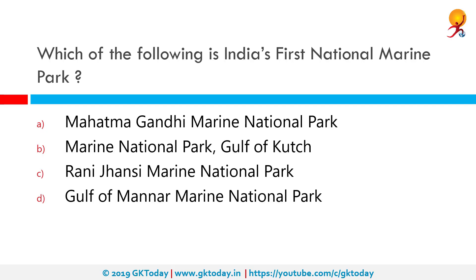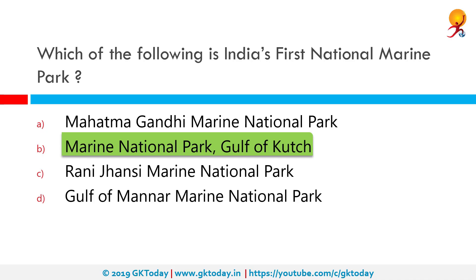Which of the following is India's first national marine park? That honour belongs to the Marine National Park of the Gulf of Kutch. It is situated on the southern shore of the Gulf of Kutch in Devbhoomi Dwarka district of Gujarat. In 1980, an area of 270 square kilometers from Okha to Jodiya was declared a Marine Sanctuary.